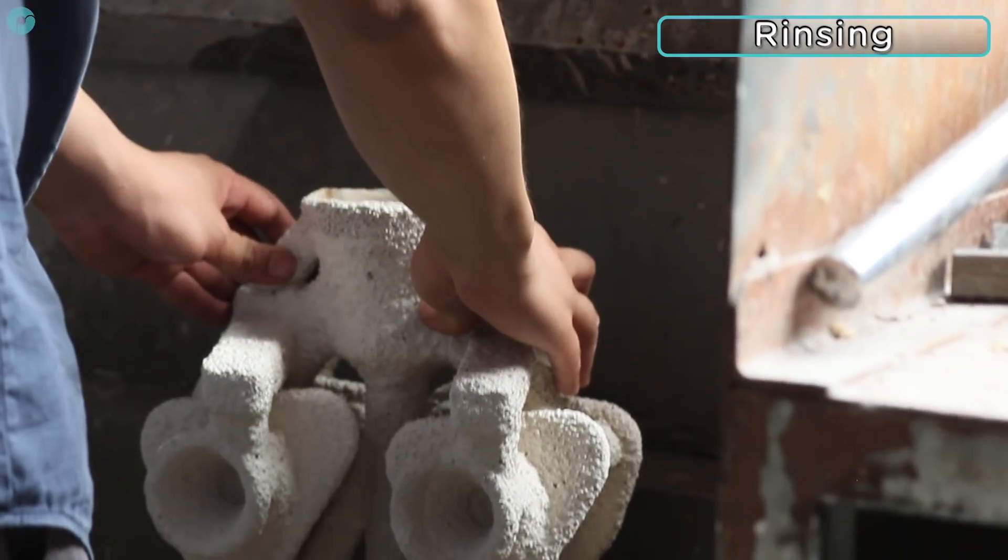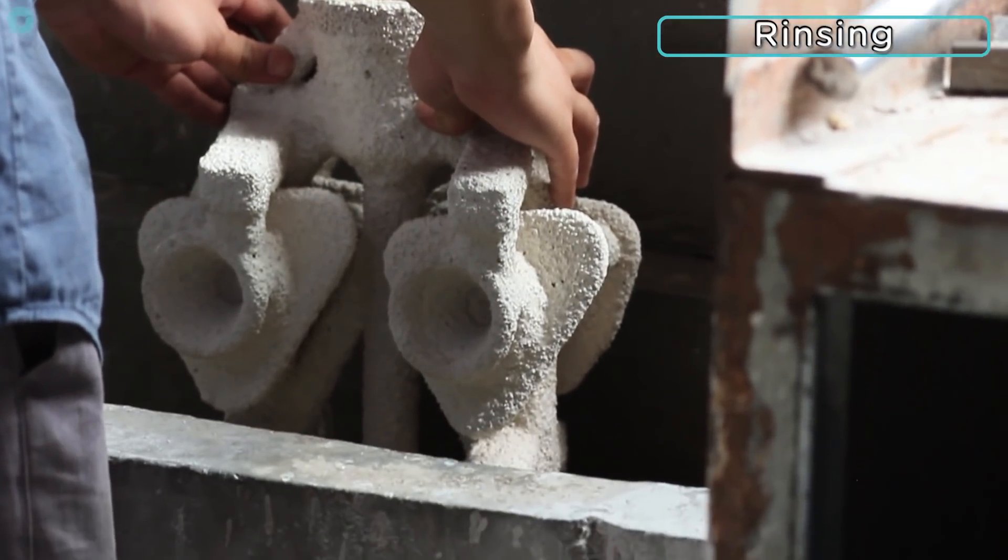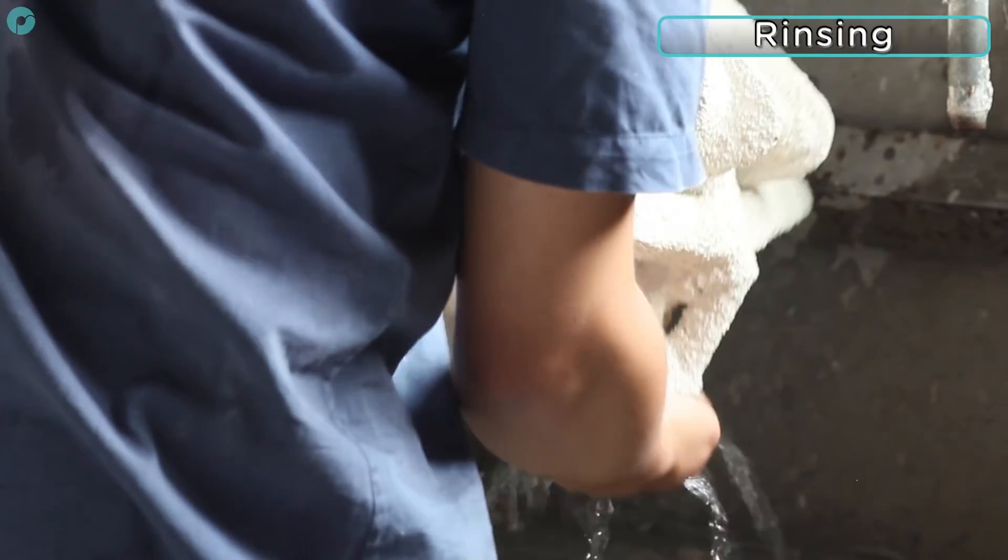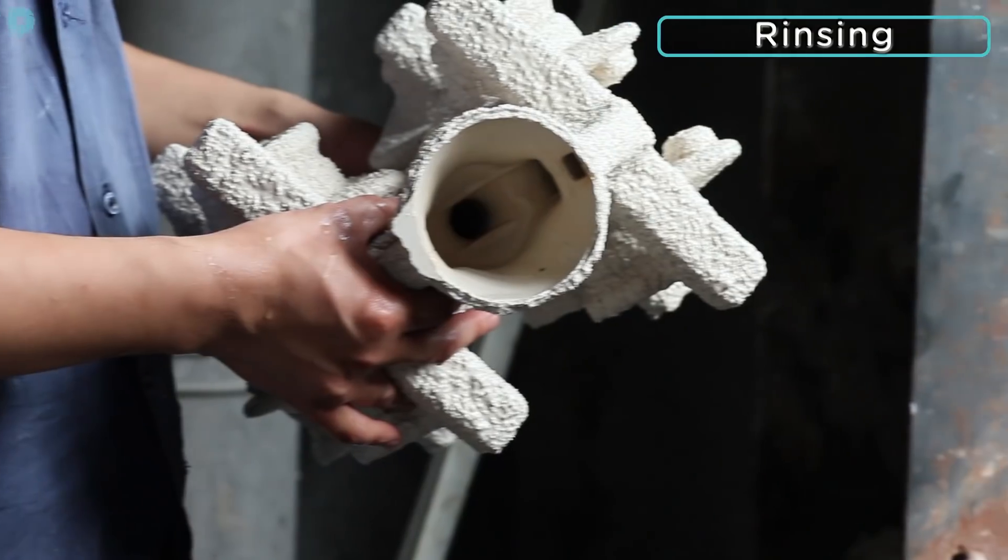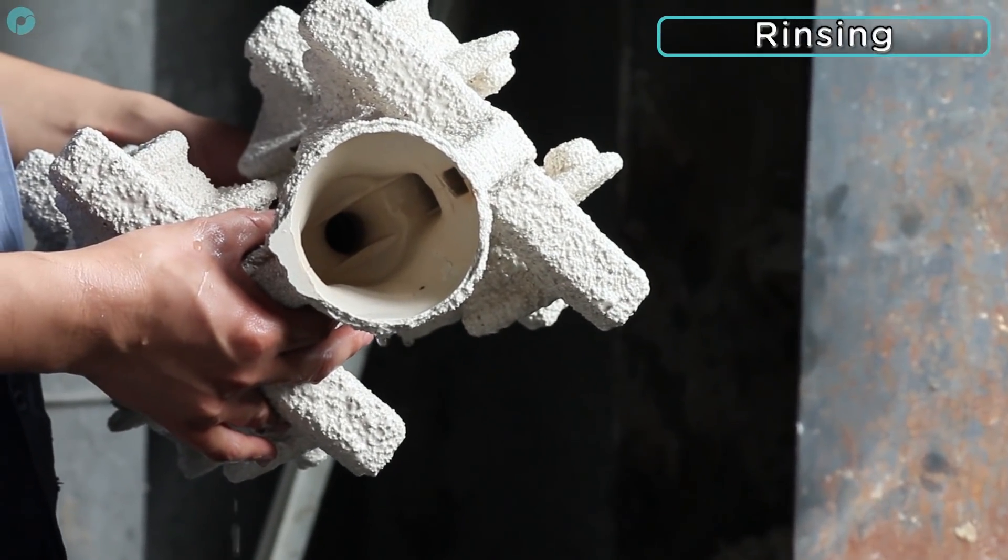For highly detailed parts, the molds can then be rinsed to wash away any residual ash, and the inside surface of the mold can be inspected before casting. However, this step is not always necessary.